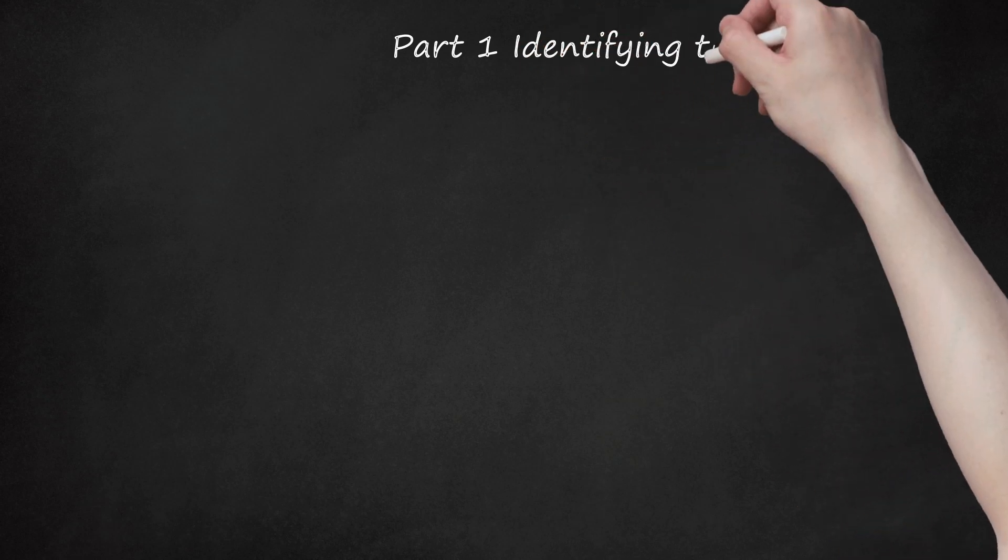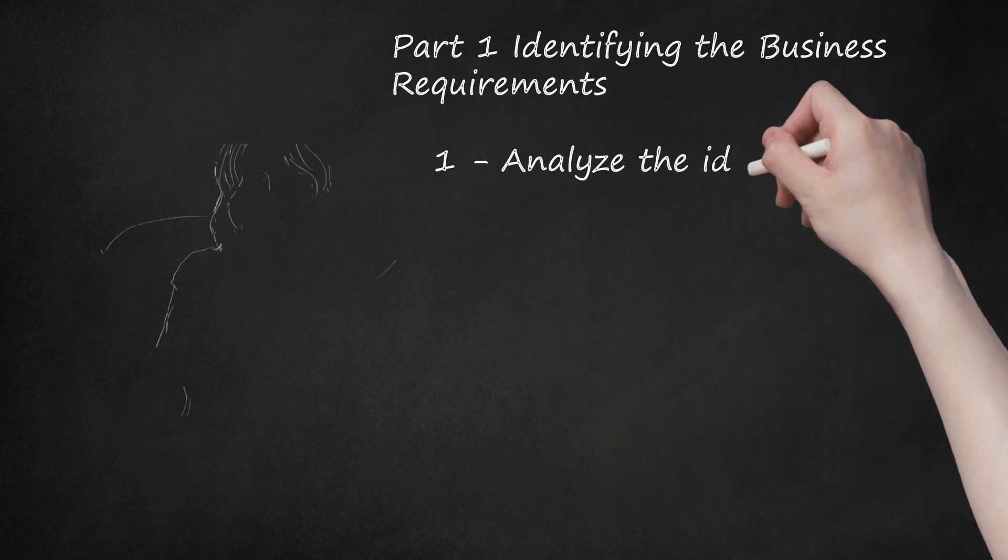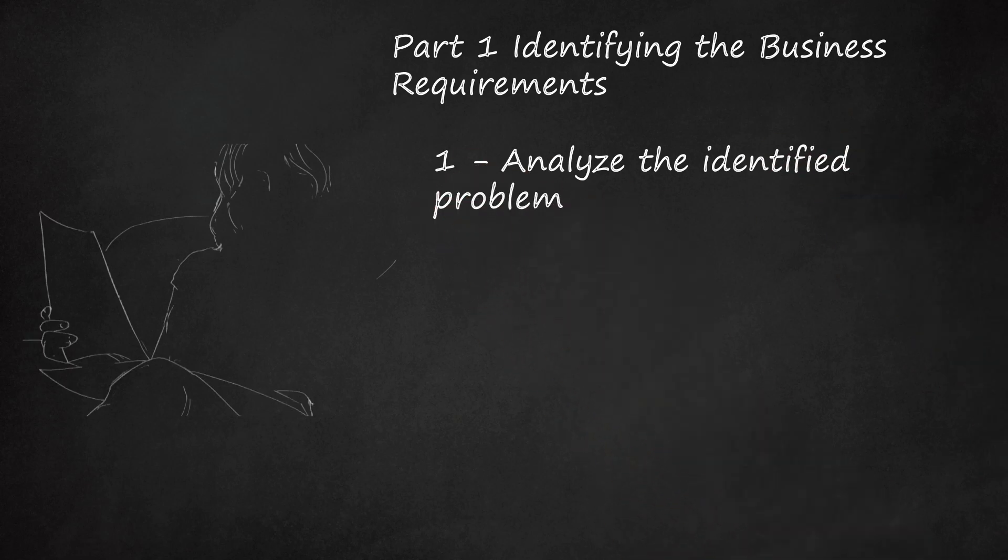Part 1: Identifying the Business Requirements. Step 1: Analyze the Identified Problem. Prior to gathering business requirements, the company needs an issue to focus on. Once a problem is identified, the company seeks the optimum solution to solve the problem.